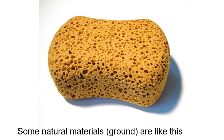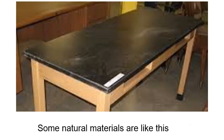Some natural materials are like a sponge — it's got a lot of open spaces so water can get in very easily. Some places, the ground is like that. Other places, however, the ground is like a laptop table. If you pour water onto this table, it's just going to sit there and not soak in.